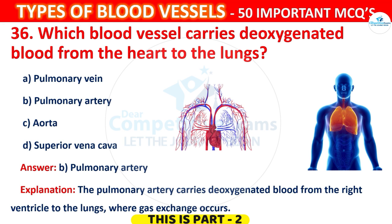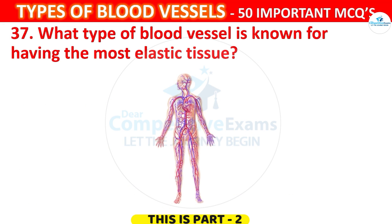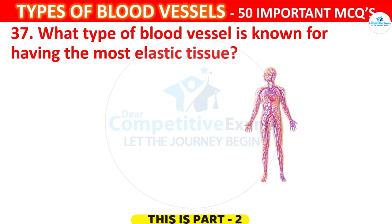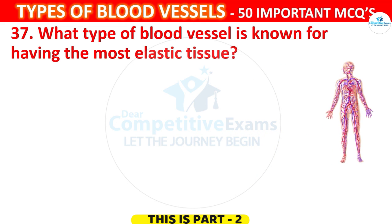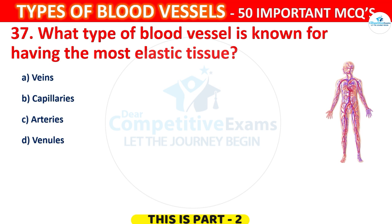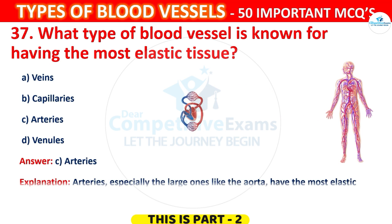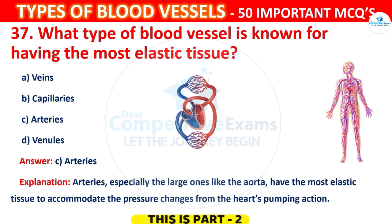Question 37. What type of blood vessel is known for having the most elastic tissue? The options are: Veins, Capillaries, Arteries, or Venules. The correct answer is C, Arteries. Arteries, especially large ones like the Aorta, have the most elastic tissue to accommodate pressure changes from the heart's pumping action.